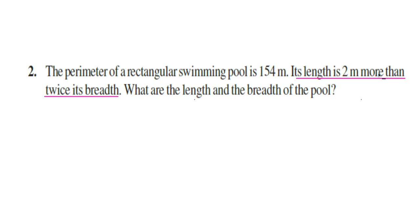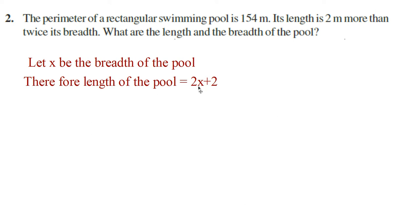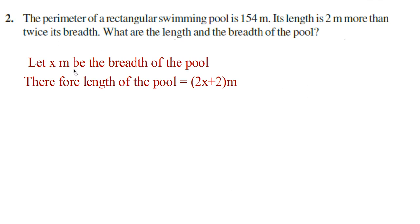Since length is given in terms of breadth, we can take breadth as x. Let x be the breadth of the pool. What is its length? Length is 2 meters more than twice its breadth. Twice its breadth is 2 into x, that is 2x. And length is 2 meters more than 2x, which you can write as 2x plus 2. Therefore, length of the pool is equal to 2x plus 2 meters.